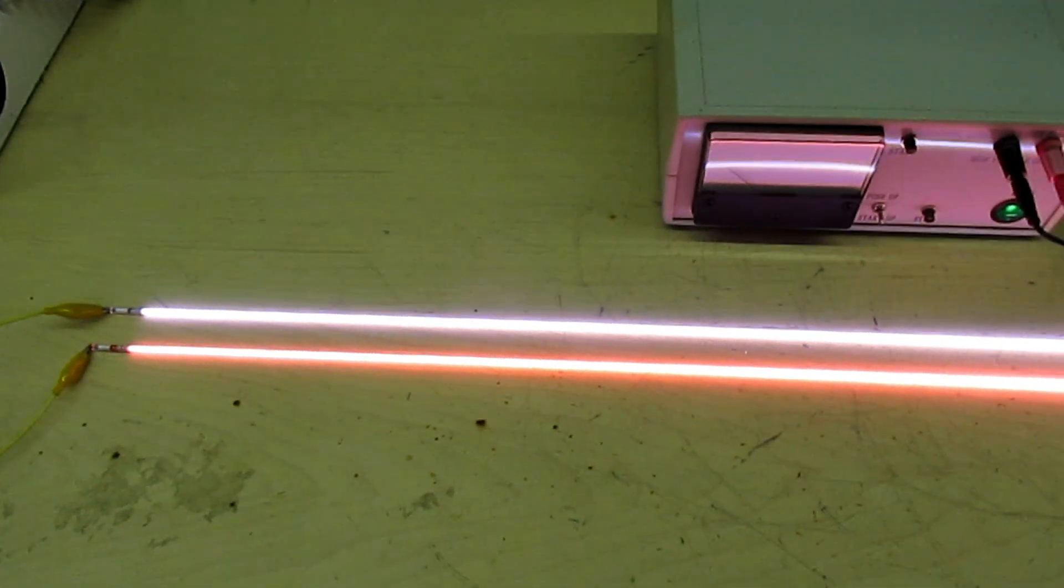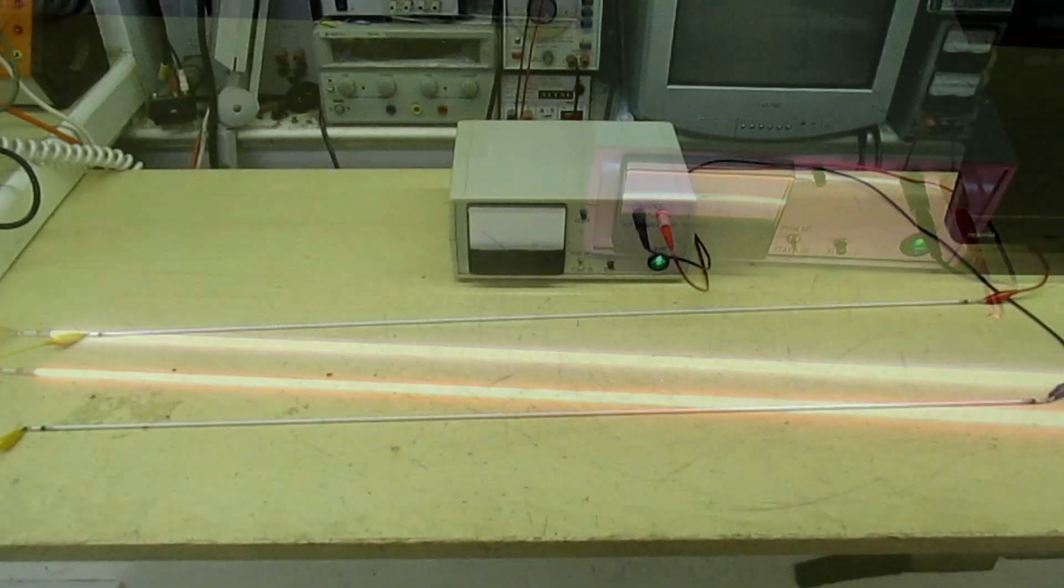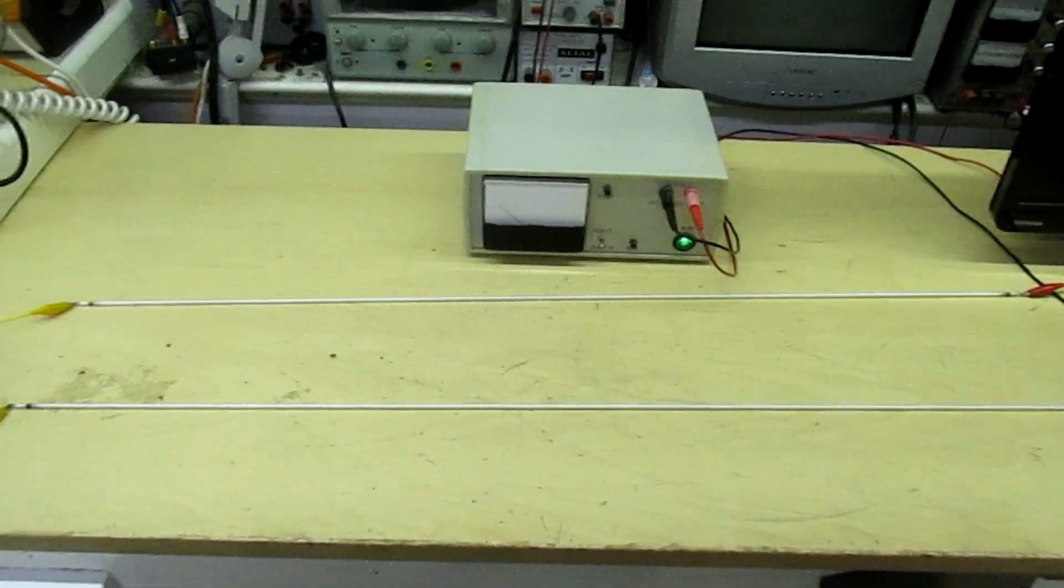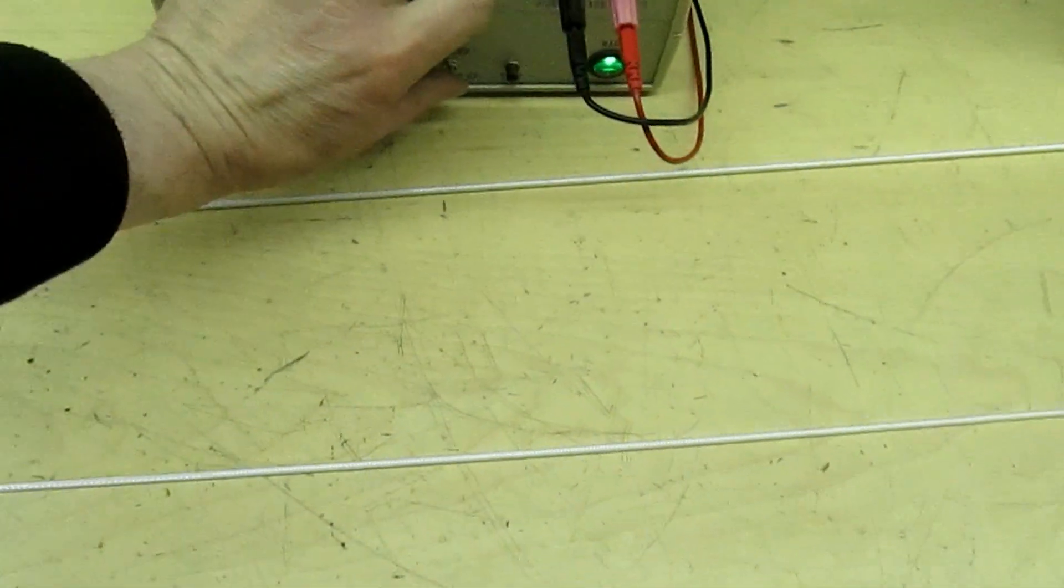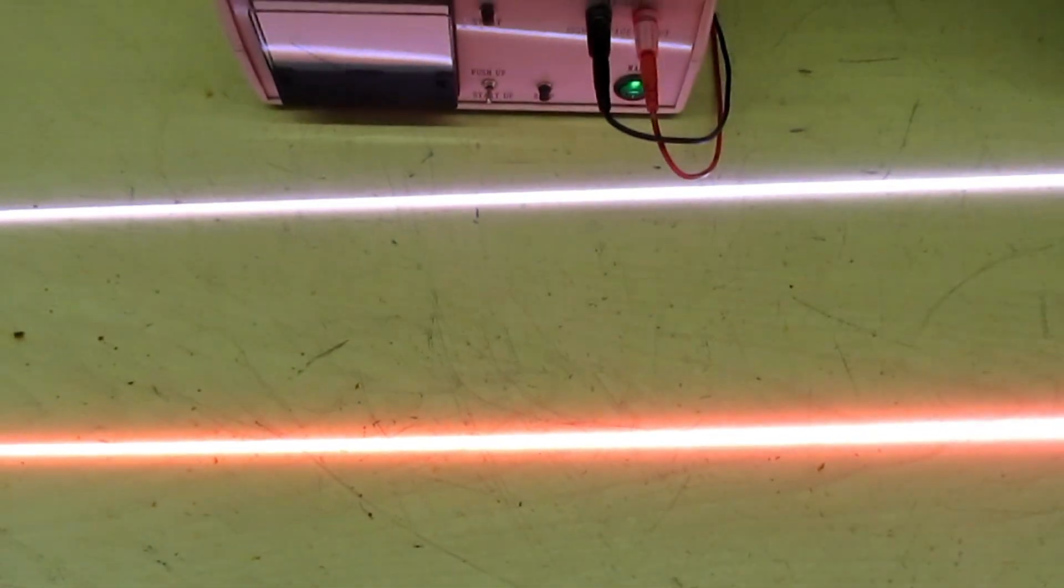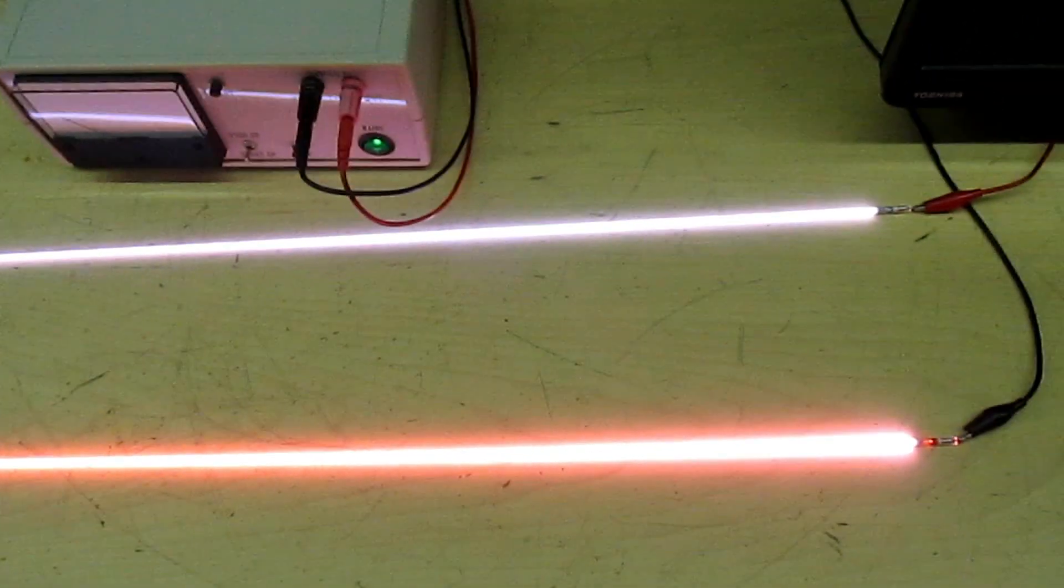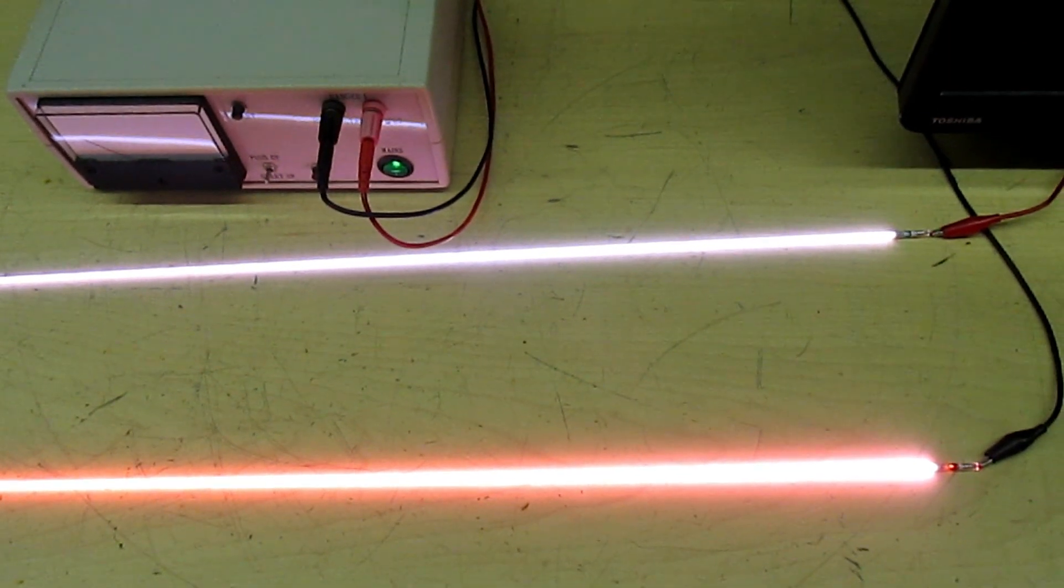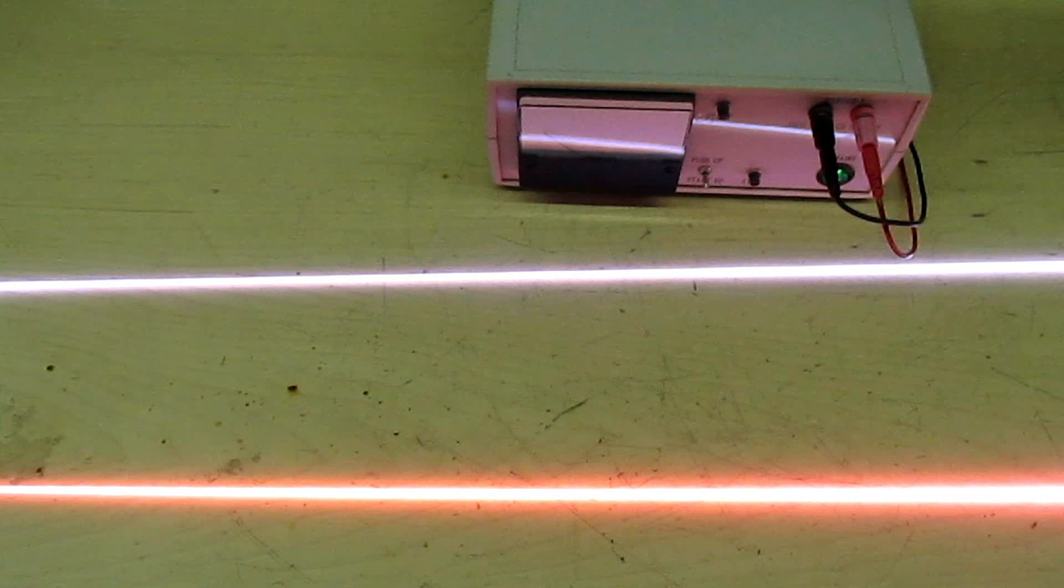In fact, I'll just stop the camera a minute and move them a little bit away from each other. Right, there we go - I've moved them a bit further apart so it should show up a bit easier. Let's get ready to power up, and there we go. You can see one's clearly white and one's clearly pink, so the pink one is the faulty one.